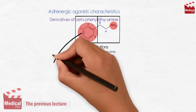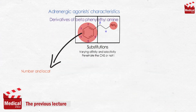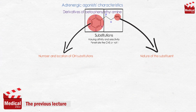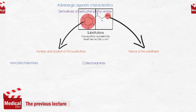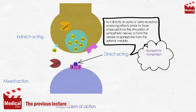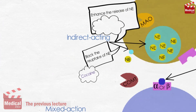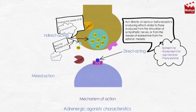In the previous lecture we discussed the adrenergic agonists' characteristics, and we knew what are the catecholamines and non-catecholamines. We also knew that they are classified according to their mechanism of action to direct acting, indirect acting, and mixed action agonists. Today we'll continue and discuss the direct acting adrenergic agonists.